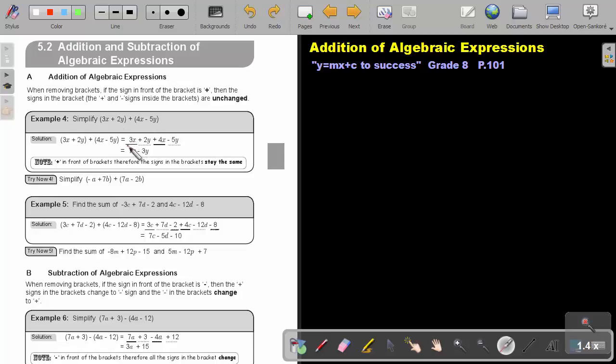So first mark the like terms. It's 3X plus 4X. Positive 2Y, negative 5Y. So 3 plus 4, that will be 7X.